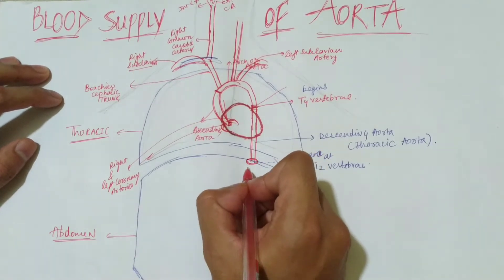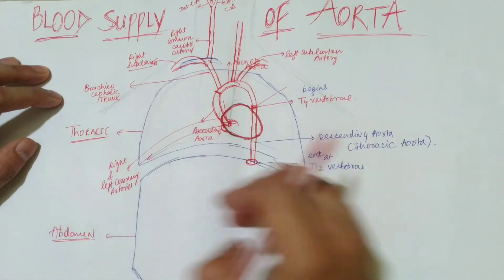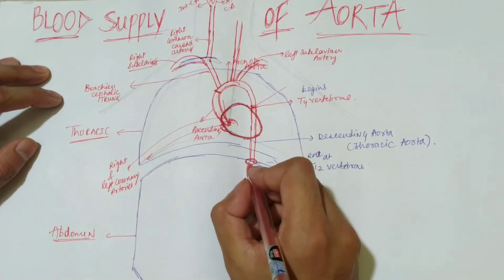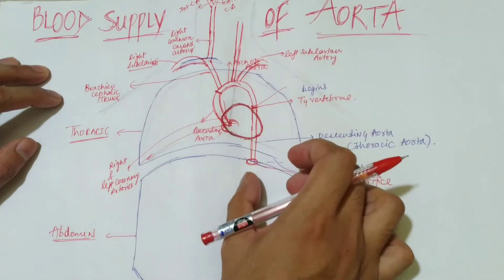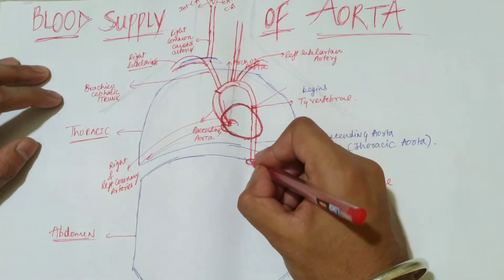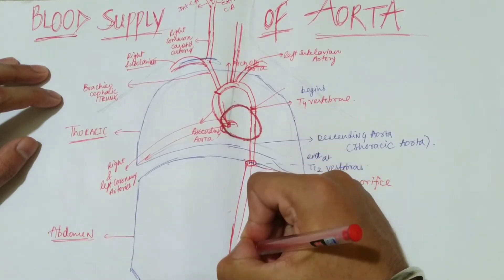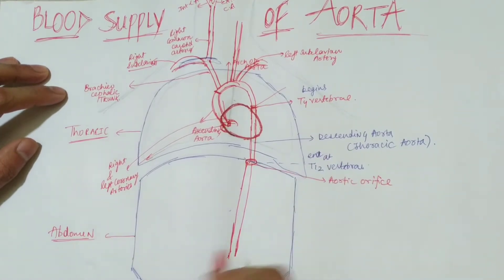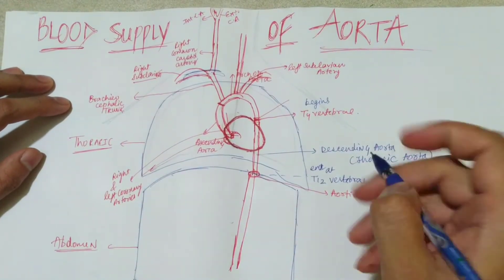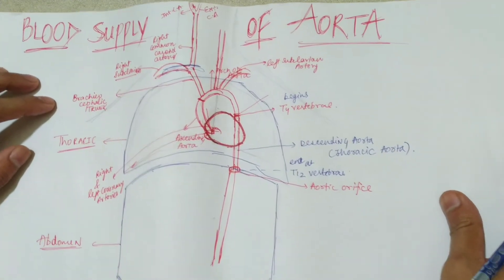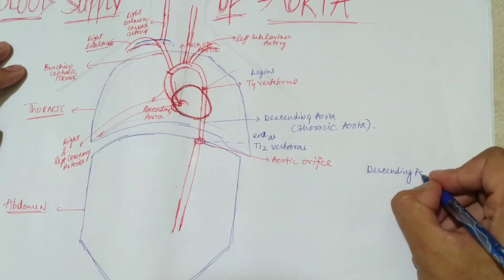Before entering the abdominal cavity, the descending aorta passes through the diaphragm — the muscular layer protecting the visceral organs — via the aortic orifice. After passing through this aortic orifice into the abdominal cavity, it is now called the abdominal aorta. We haven't discussed the branches of the descending aorta yet, so let's write them separately.